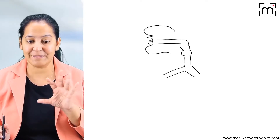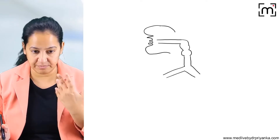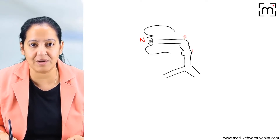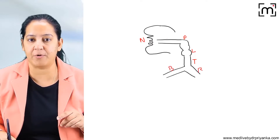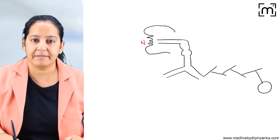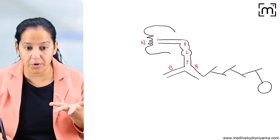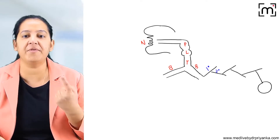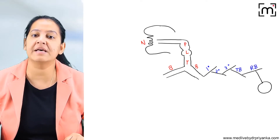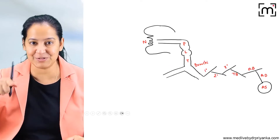Before understanding COPD, you must understand the respiratory tract. Here is a simplified diagram of the respiratory tract. The respiratory tract starts with the nose and the mouth. Nose leads to nasopharynx, pharynx leads to larynx, larynx leads to trachea, and trachea leads to two primary bronchi — the right and the left. After the bronchi, it divides into bronchioles: primary, secondary, tertiary, and finally terminal bronchioles, which give rise to respiratory bronchioles, then alveolar duct, and finally alveolar sac.